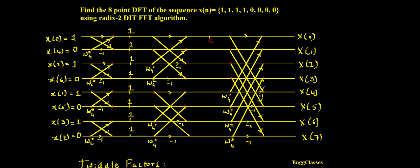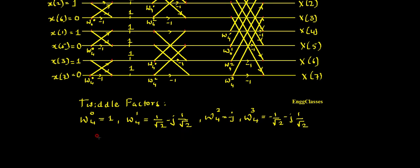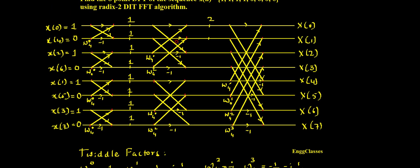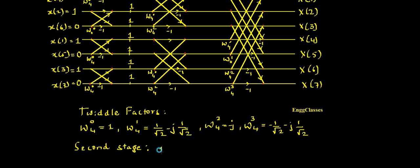Now moving on to the second stage. The first output is the resultant of two signals: 1 + 1×W4^0 = 1 + 1 = 2. The next output: 1 + 1×W4^2 = 1 + 1×(−j) = 1 − j. The next: 1 + 1×W4^0×(−1) = 1 − 1 = 0. And one more: 1 + 1×W4^2×(−1) = 1 − (−j) = 1 + j.